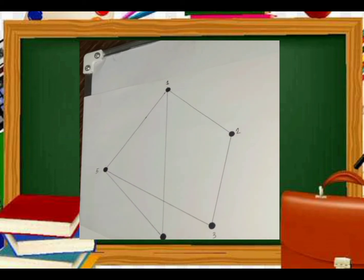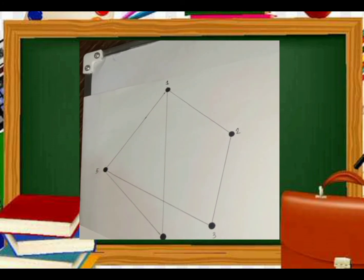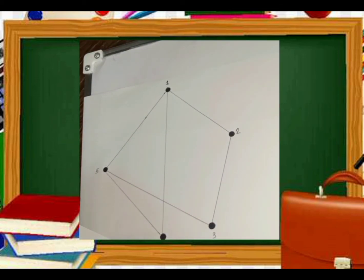According to the solution, we connect two vertices with an edge if the corresponding classes want to feed the same animal. Vertices one and five are connected because they both want to feed the hippos. Vertices five and four are connected because they both want to feed the polar bears. Vertices one and four are connected because they both want to feed the giraffes.